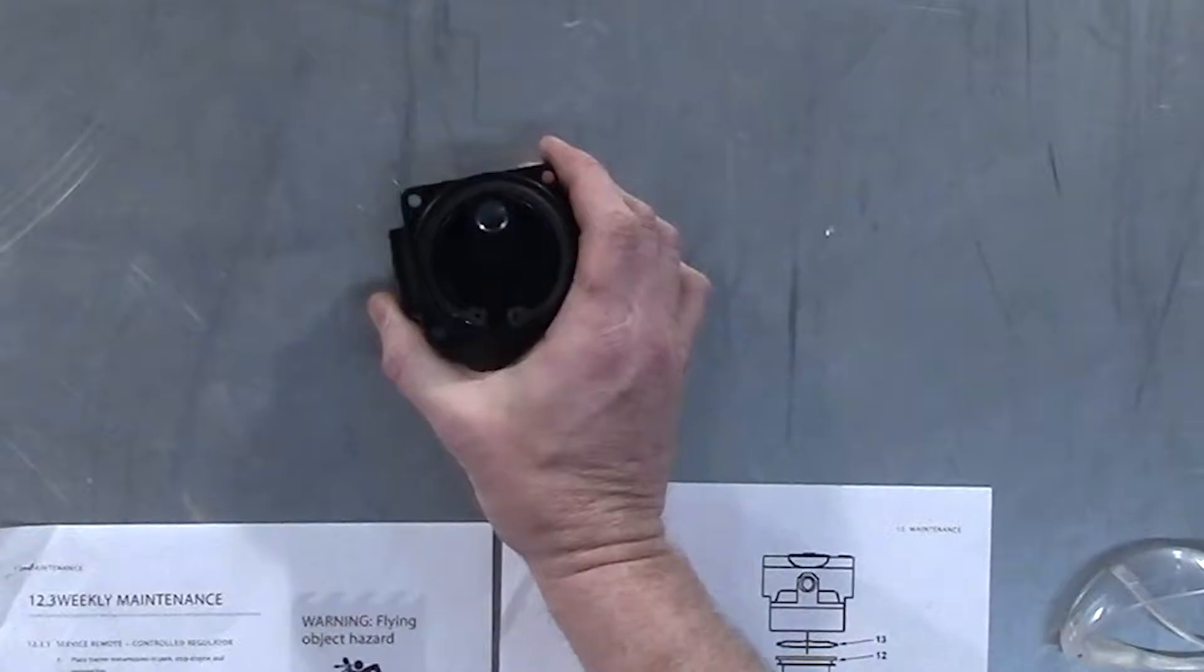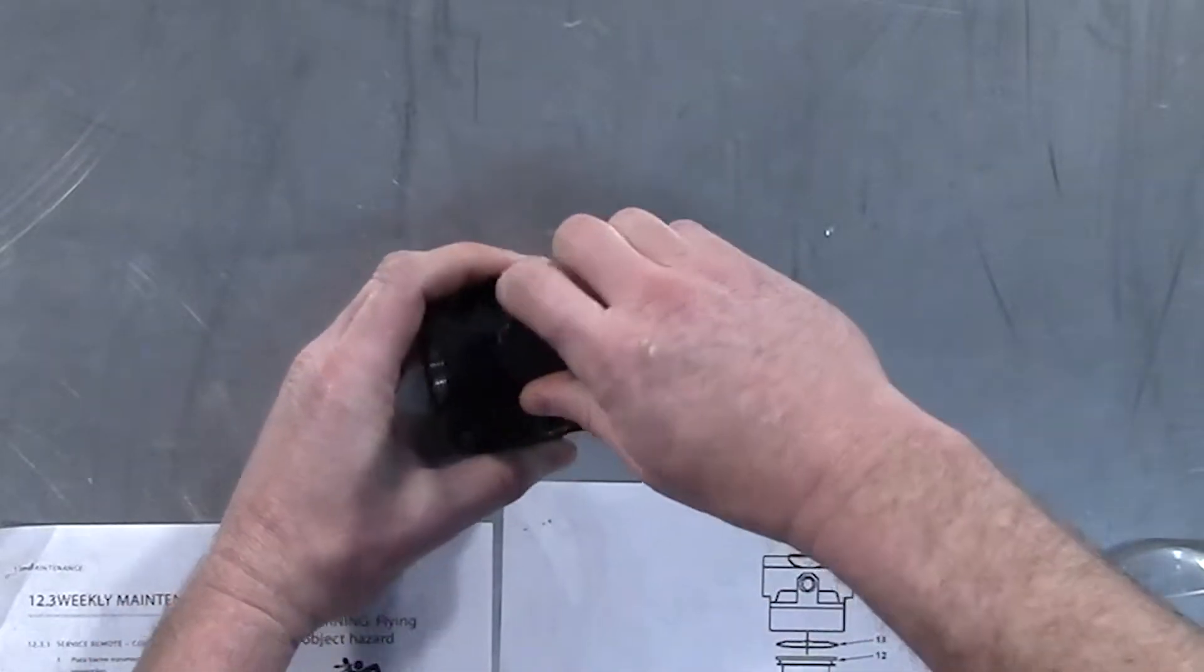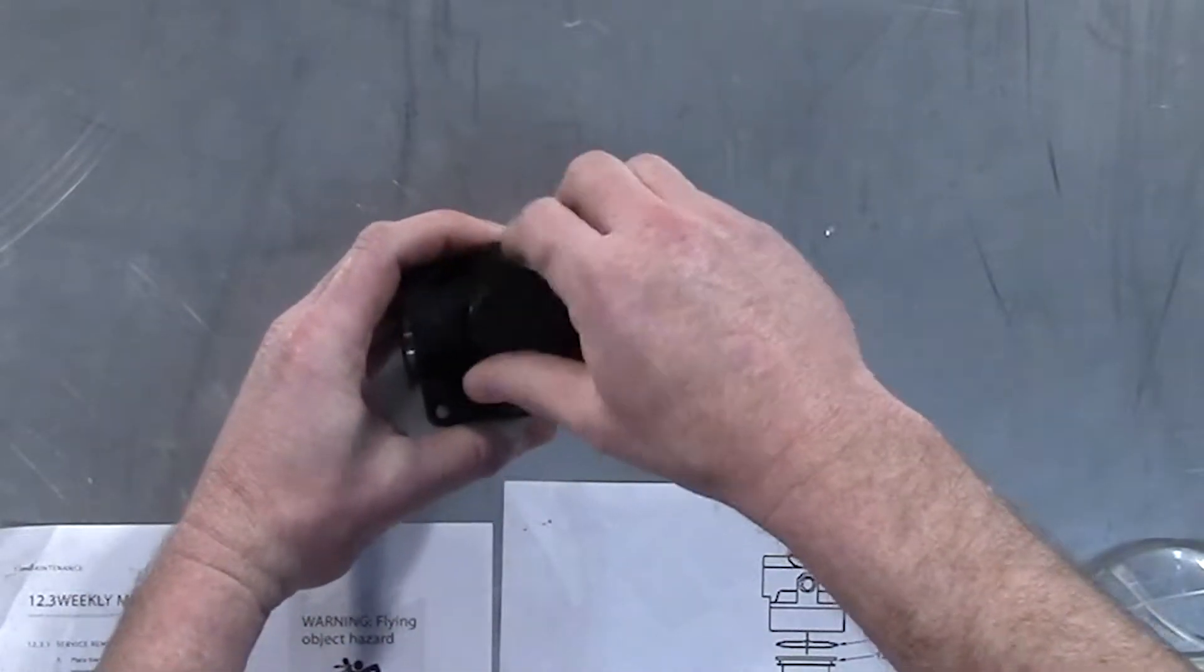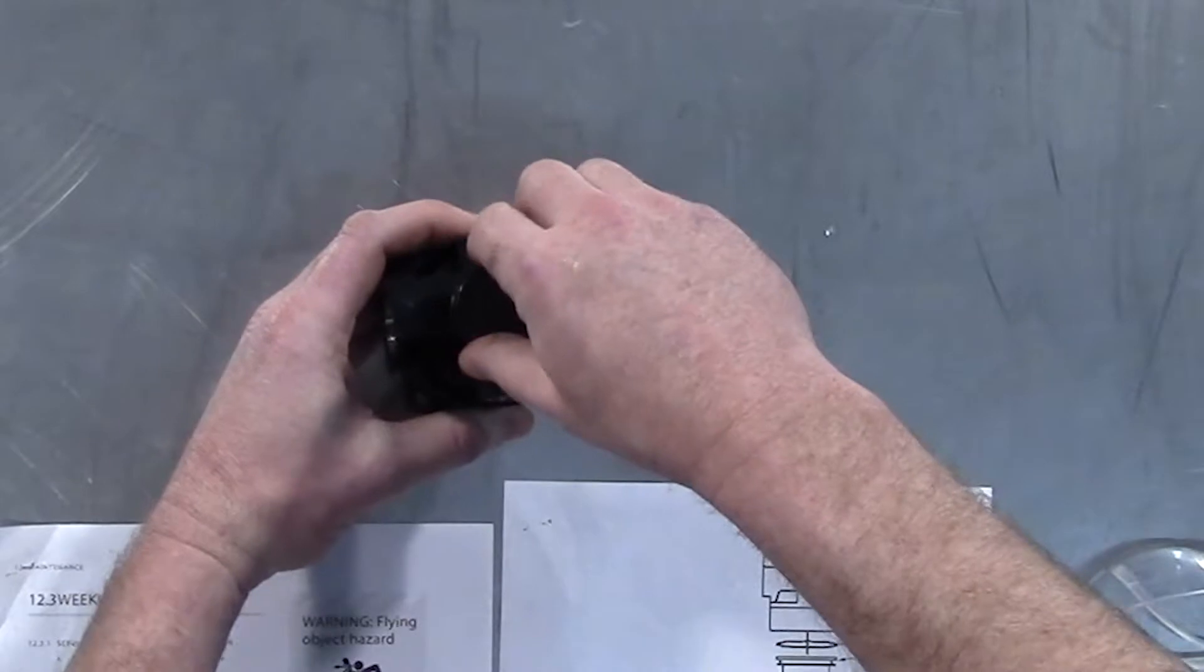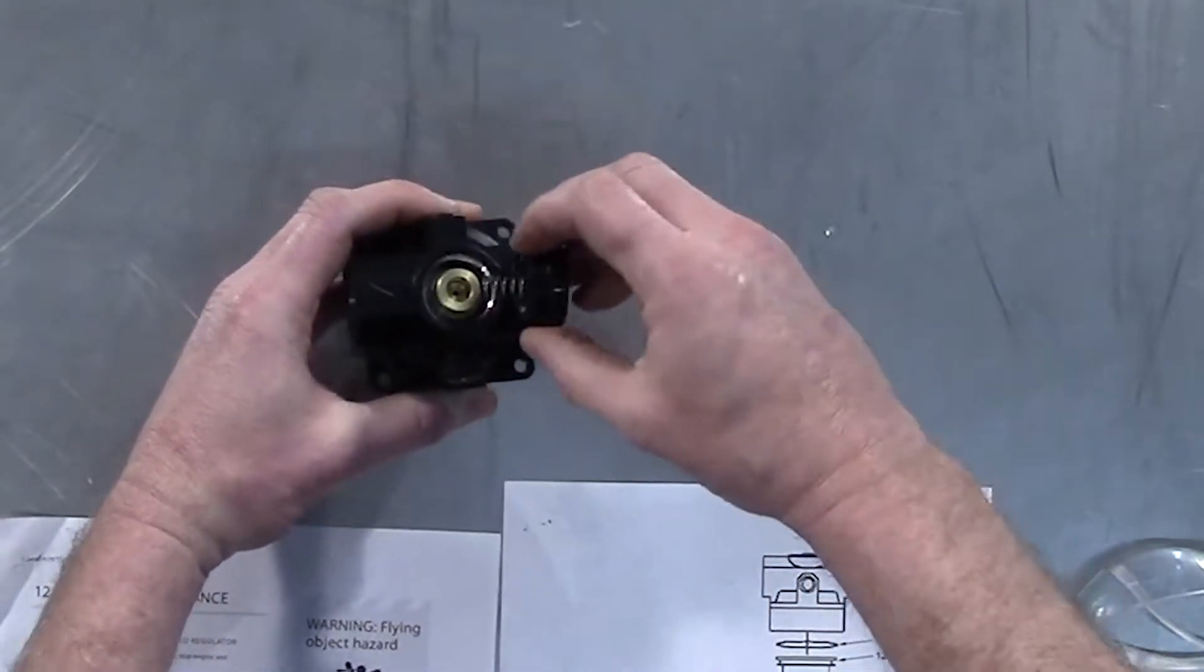That being said, we'll go to the top of the regulator and unscrew the regulator cap. There is an O-ring on this cap as well as a spring and the piston assembly that we'll be removing from this portion of the regulator.